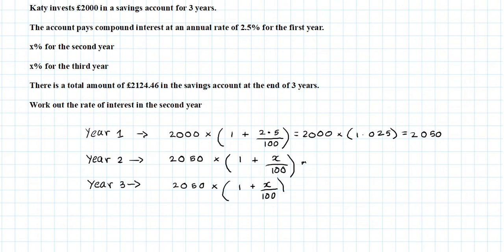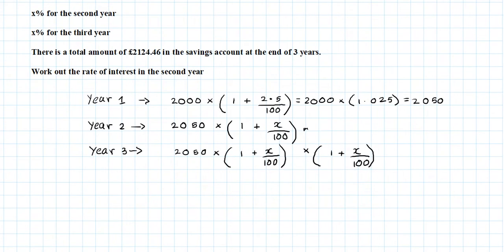And then you're going to multiply it by another increase by x%, so 1 plus x over 100. Since you're multiplying by the same number, this represents £2050 times (1 + x/100) squared.